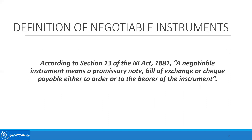The Negotiable Instrument Act of 1881 provides the definition for negotiable instruments under Section 13. It is defined as: a negotiable instrument means a promissory note, bill of exchange, or check payable either to order or to the bearer of the instrument. Please note that under the NIA Act of 1881, currencies are not classified as a negotiable instrument. So only three documents — promissory note, bill of exchange, or check — are classified as negotiable instruments under this section. This covers the main definition, features, and purpose of negotiable instruments in the country.